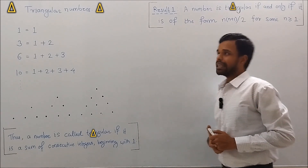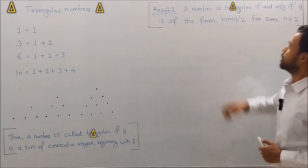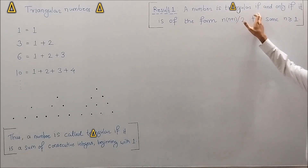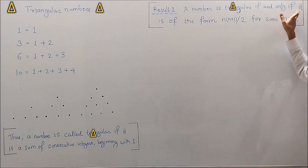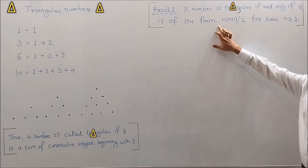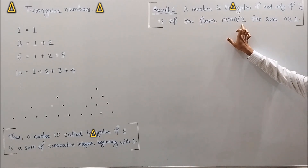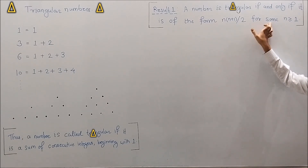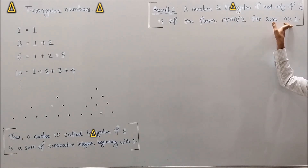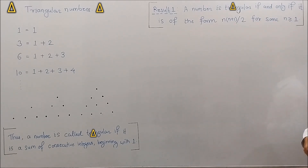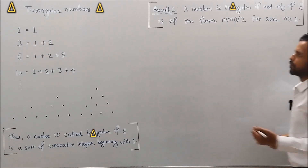We will prove the result that a number is triangular if and only if it is of the form n(n+1)/2 for some n greater than or equal to 1. Let's begin the proof.